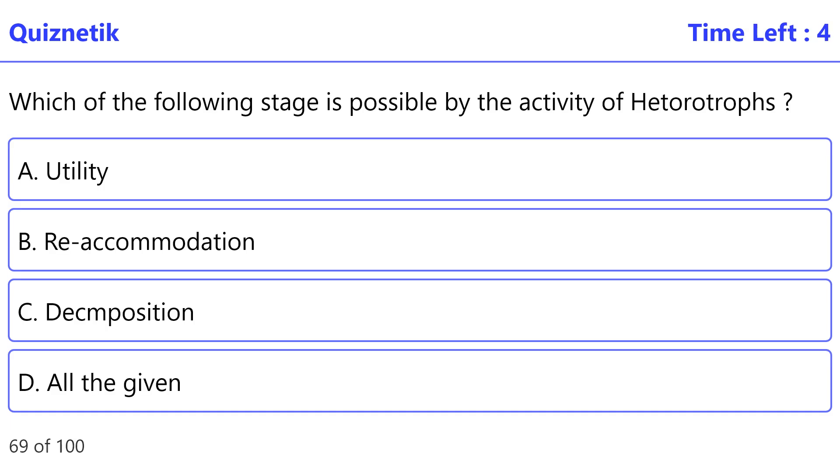Which of the following stage is possible by the activity of heterotrophs? The correct option is D, all the given.